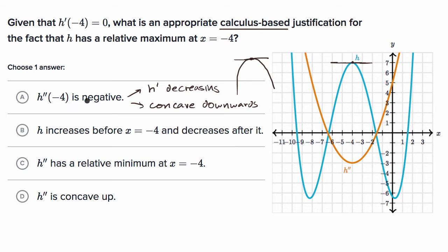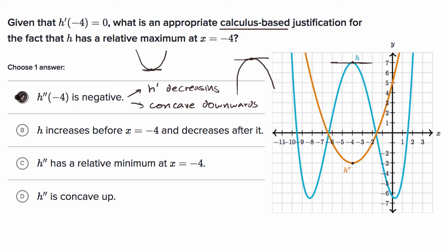If the second derivative at that point were positive, then we would be concave upwards, and if the derivative is zero there, we'd say that's a relative minimum point. But this first choice is indeed true — the second derivative is negative at x equals negative four, which means we are concave downwards, an upside-down u shape, and the point where the derivative is zero is indeed a relative maximum. That is the answer.